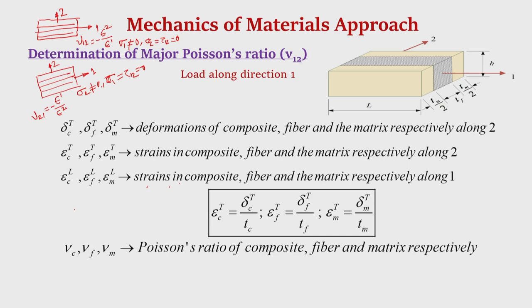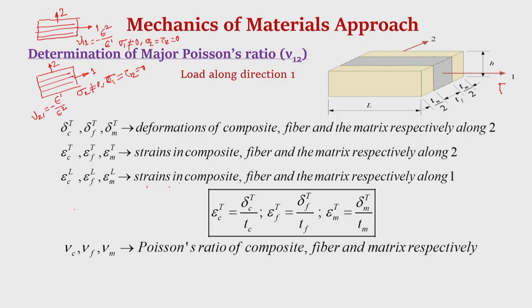So nu_12 is defined as the major Poisson's ratio and nu_21 is defined as the minor Poisson's ratio. Many times nu_12 is simply referred to as Poisson's ratio and nu_21 is the minor Poisson's ratio. In the determination of the major Poisson's ratio using the mechanics of material approach, we take the same representative volume element (RVE) used for determination of longitudinal Young's modulus. We apply a load along material direction 1 but study the deformation along direction 2, which is the Poisson's effect.